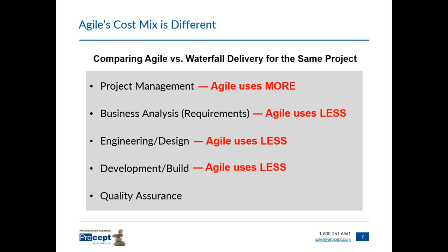Finally, quality assurance is one activity where effort and costs actually increase significantly under agile methods. In waterfall we only test near the end of the project, after all deliverables have been built. With agile we test throughout the project each iteration, giving us more time to find and fix defects. This leads to much higher quality, but at a cost — agile projects spend a much higher portion of project effort on quality assurance activities than waterfall projects.